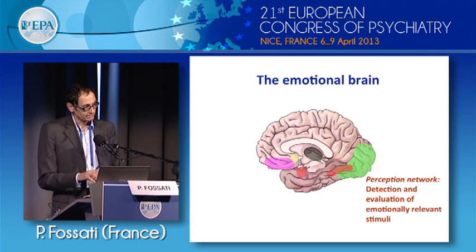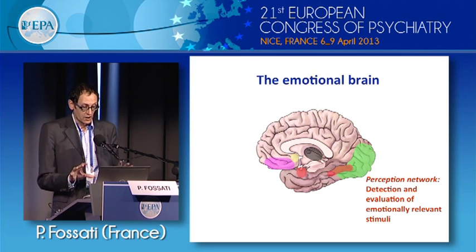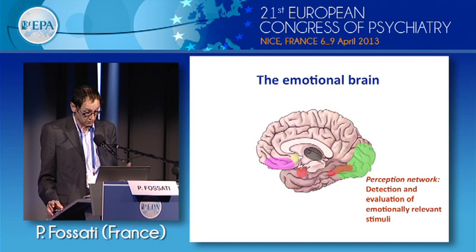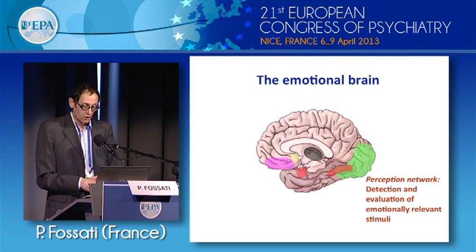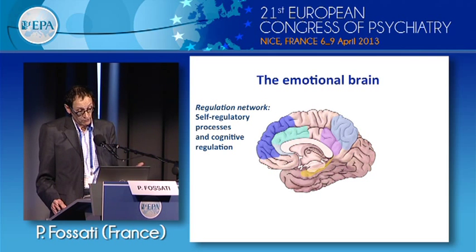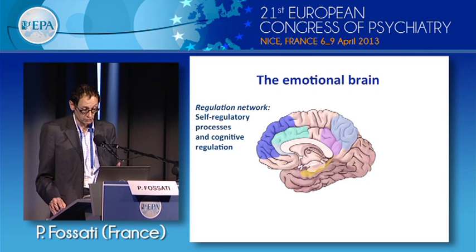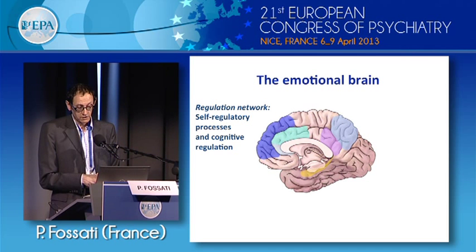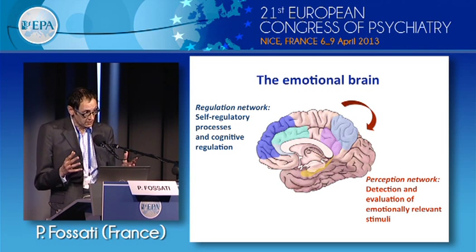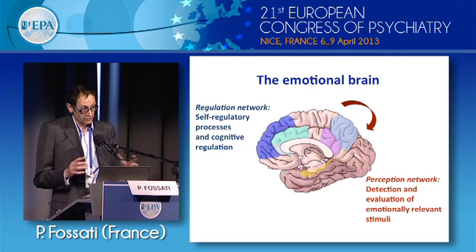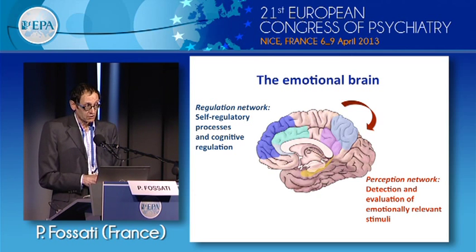First I would like to set up the scene of the emotional brain. The emotional brain is organized along two main networks. The first is a perception network, which involves the amygdala and orbitofrontal cortex, and is involved in the detection and evaluation of emotionally relevant stimuli. On the other side, we have the regulation network, including lateral and medial prefrontal areas, involved in regulation of emotion using different types of cognitive and self-regulatory processes. These networks are very linked together and interact to produce normal adaptive behavior.